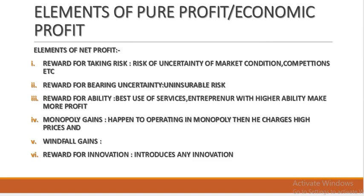What are the elements of pure profit or economic profit? First, reward for taking the risk: the entrepreneur sets up his business under uncertainty about whether it will be viable, facing risks of market conditions and intense competition. Second, reward for bearing uncertainty: the entrepreneur bears uninsurable risk. There are two types of risk — risk which can be insured, and risk which cannot be insured. He bears the uncertainty of the latter, and that is why he gets the reward.